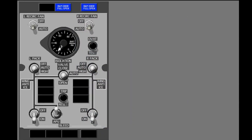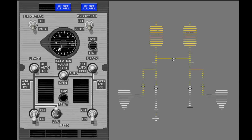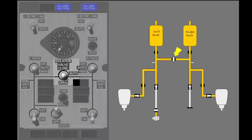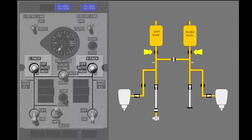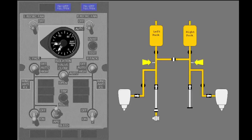The controls and indicators for the bleed air system are on the forward overhead panel. The isolation valve switch controls the isolation valve. The engine and APU bleed air switches control the engine and APU bleed air valves. The air conditioning pack switches control the air conditioning pack valves. The bleed air duct pressure indicator shows the bleed air pressures for the left and right ducts.